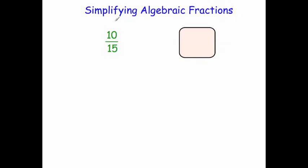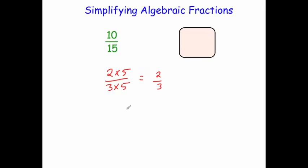In this video we're going to look at how to simplify algebraic fractions. Here we've got a numerical example: 10 over 15. If I wanted to cancel this down, I would divide both the top and the bottom by 5, because 2 times 5 is 10 and 3 times 5 is 15. Dividing both top and bottom by 5 leaves us with 2 thirds. To cancel down an algebraic fraction, we're going to factorise the numerator and factorise the denominator if we can, and then cancel down.